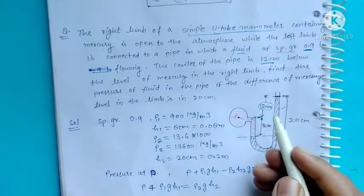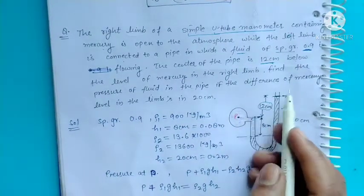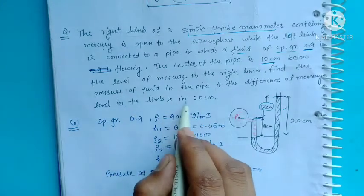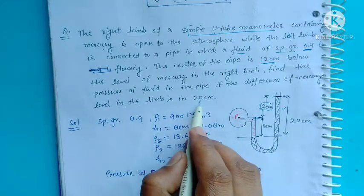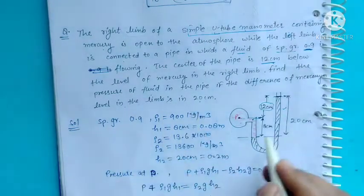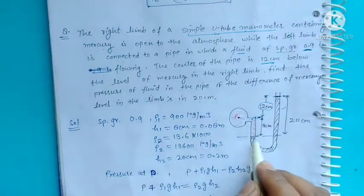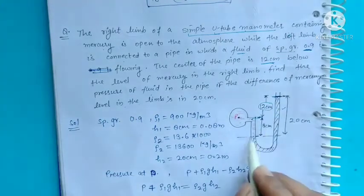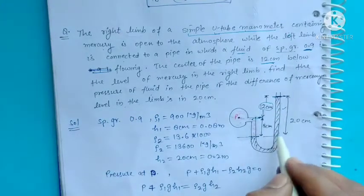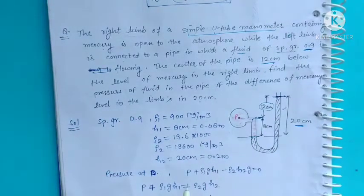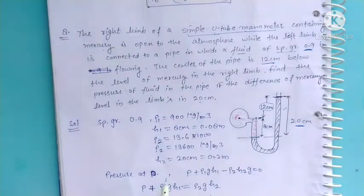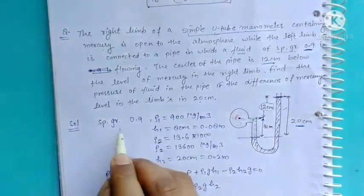If the difference of mercury level in the two limbs is 20 cm — यहाँ पर दोनों side का mercury level difference 20 cm है। तो चलते हैं numerical को solve करते हैं।